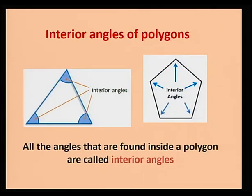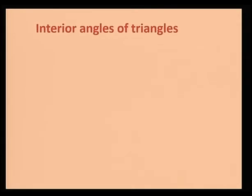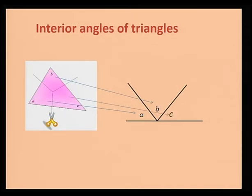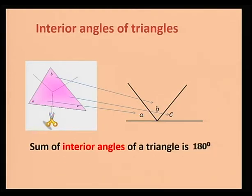Let's have a look at interior angles of a triangle. Consider the following triangle. If we cut it into three parts and place the angles next to each other, as you can see on the diagram, the three angles together form a straight angle. You know that a straight angle is 180 degrees. So, angle A plus angle B plus angle C equals 180 degrees — the sum of the interior angles of a triangle is 180 degrees.